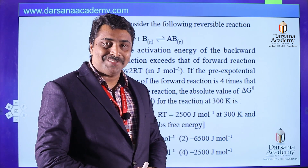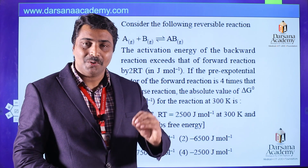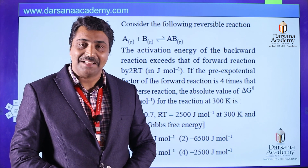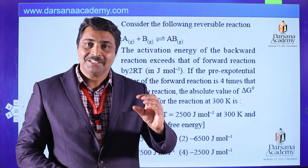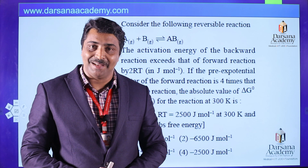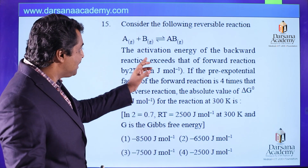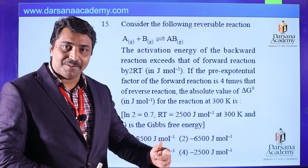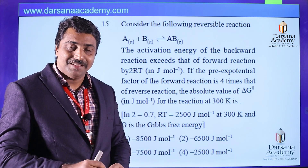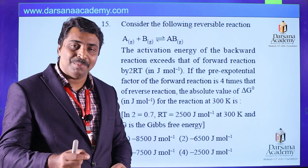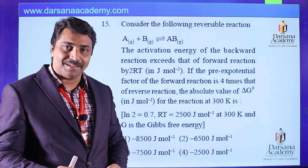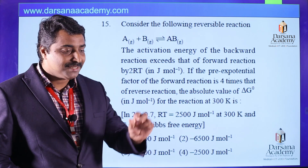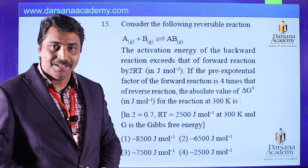This question is not only based on chemical kinetics but also thermodynamics and chemical equilibrium. The relationship for delta G zero is obtained from thermodynamics. It is given that the activation energy for the backward reaction exceeds that of the forward reaction by 2RT, and the Arrhenius constant for the forward reaction is four times that of the backward reaction.